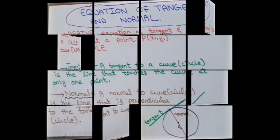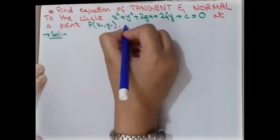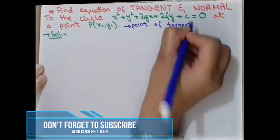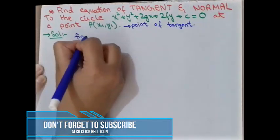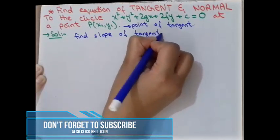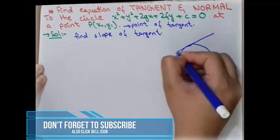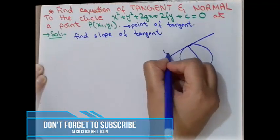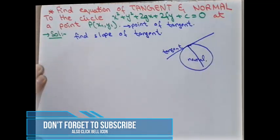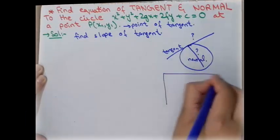Now we move to derive the equation of tangent and normal. We have to find the equation of the tangent and normal to a circle at a point P(x1, y1). Drawing a rough diagram: here is the circle, this line is the tangent, and this perpendicular line is the normal. We need to find the equations of these two lines.